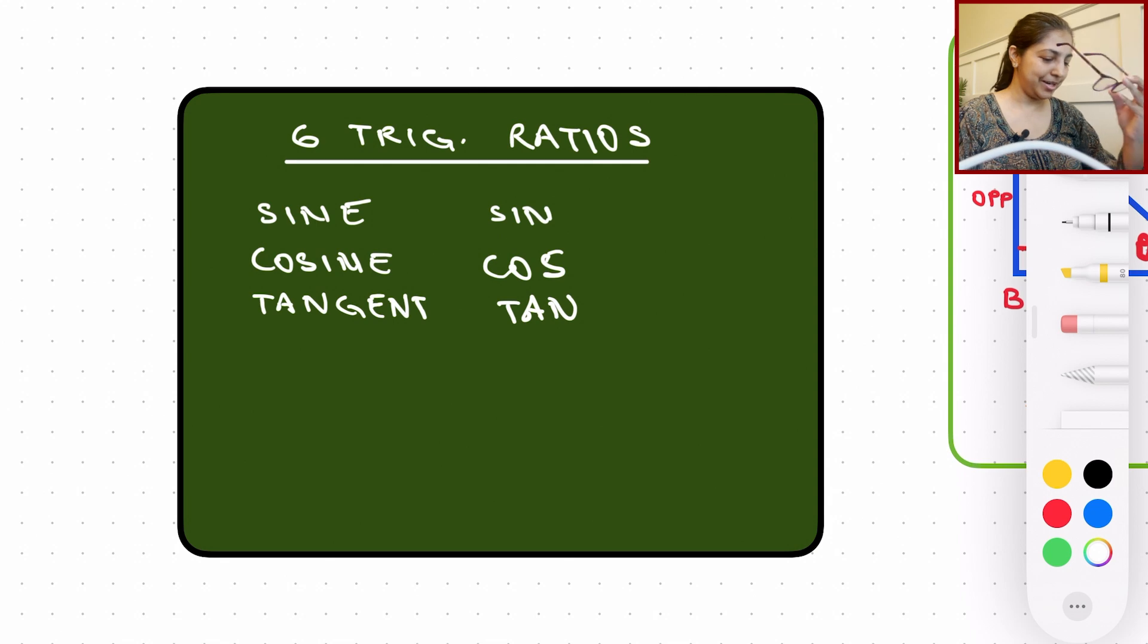Okay, let's go ahead and get started. As you can see on the screen, I've already written out the three trigonometric ratios that we have learned before. So I'll just go over it one more time. So sine, and the short form for sine is going to be sin, S-I-N, cosine, cos, tangent is written as tan.